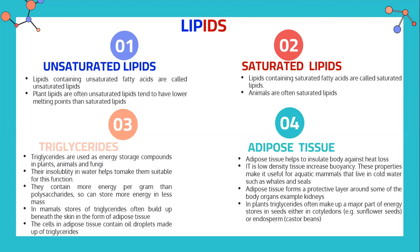In plants, triglycerides make up a major part of the energy store in seeds, either in the cotyledon, for example sunflower seeds, or in the endosperm, for example castor beans.